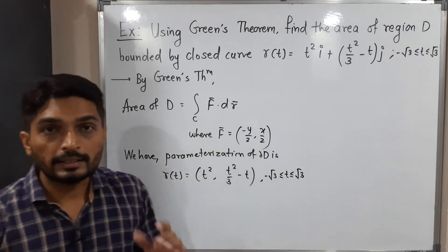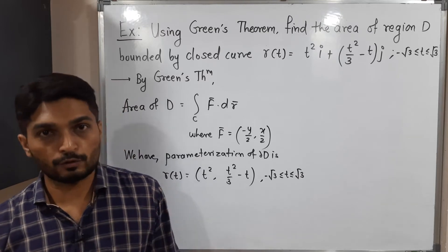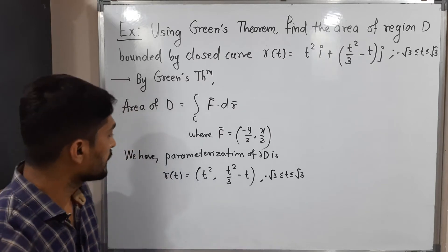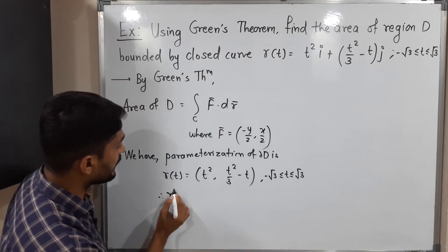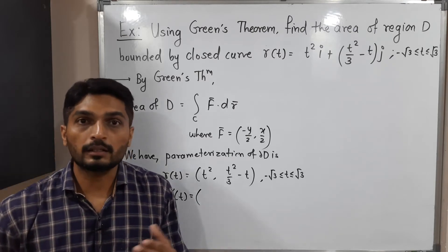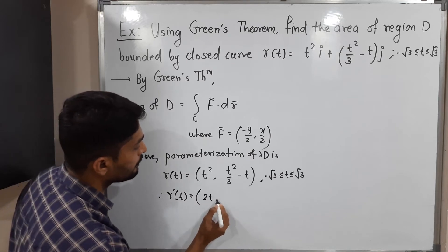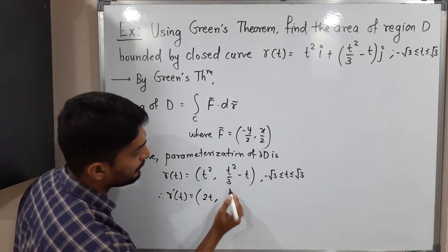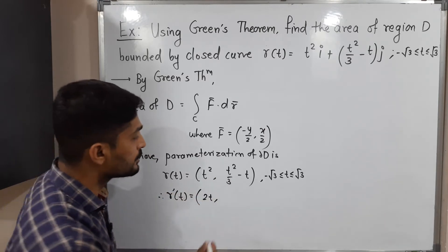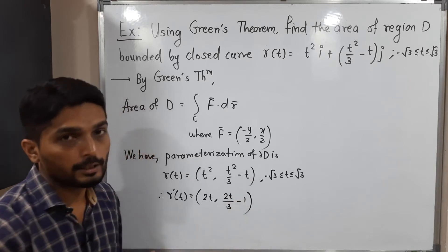To solve the line integral, we need to calculate f(R(t)) and R'(t). Let us find those first. We have R(t), so let me find R'(t) — that means its derivative. When you have a function like this, we take the component-wise derivative. Derivative of t² is 2t, and for the second component: 1/3 is constant, derivative of t² gives 2t/3, and derivative of t is 1. So R'(t) = (2t, 2t/3 - 1).